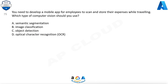Question 75. You need to develop a mobile app for employees to scan and store their expenses while traveling. Which type of computer vision should you use? A. Semantic segmentation. B. Image classification. C. Object detection. D. Optical character recognition (OCR).